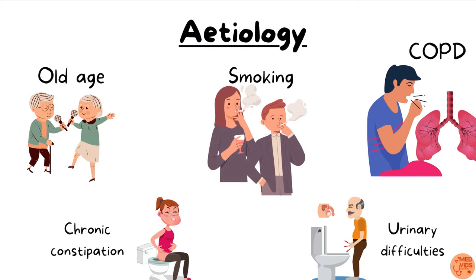Etiology of inguinal hernia: it is common in old age because the anterior abdominal wall muscles naturally weaken. Smoking can predispose to inguinal hernia by affecting normal collagen production and also by causing chronic cough, which increases intra-abdominal pressure. It is also common in patients with COPD, in those with chronic constipation due to prolonged straining, and in older men with urinary difficulties such as benign prostatic hyperplasia (BPH), all of which increase intra-abdominal pressure.